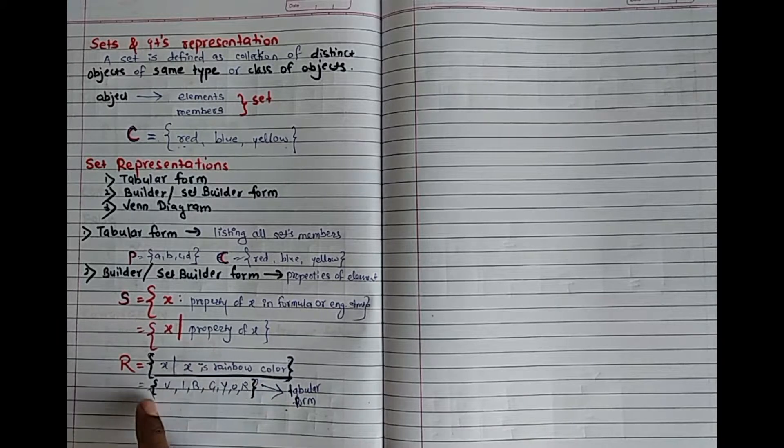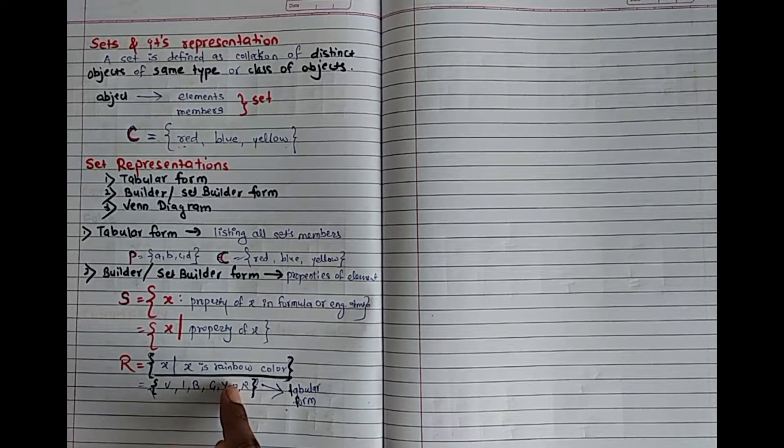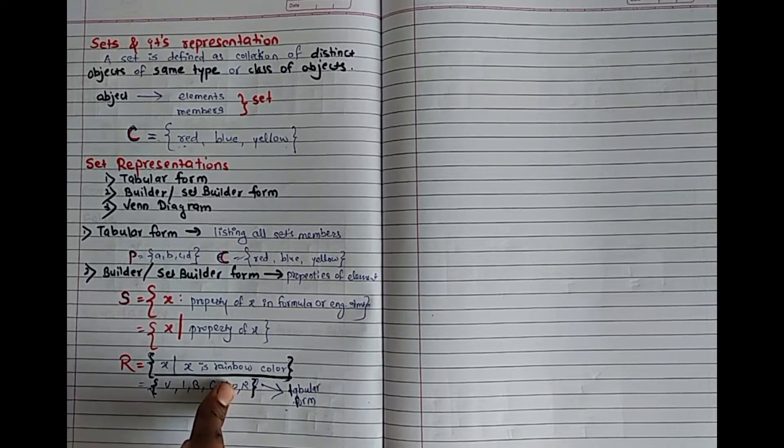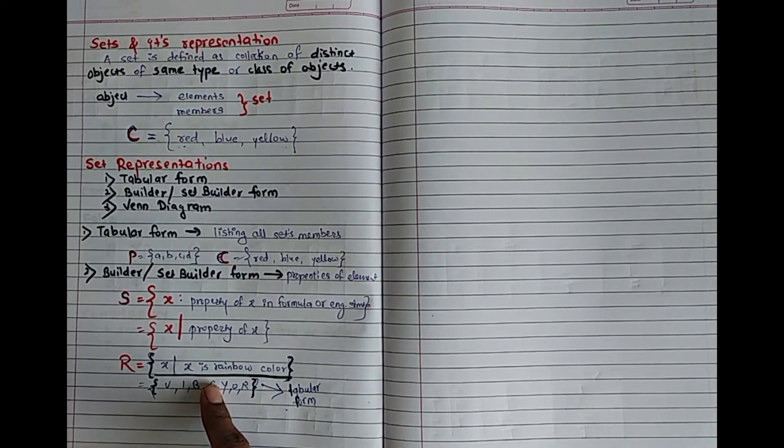VIBGYOR. So it will be violet, indigo, blue, green, yellow, orange and red. So it will be written. But what is this? This is tabular form. If I convert it in English statement...